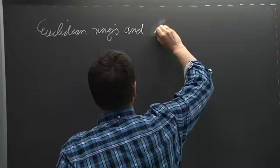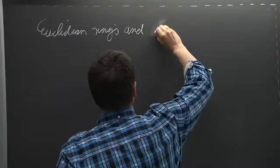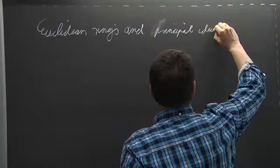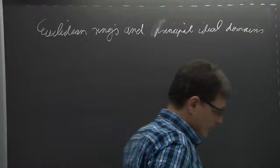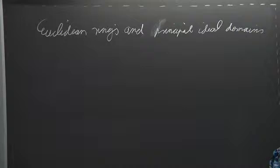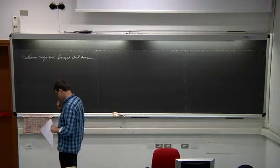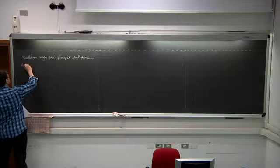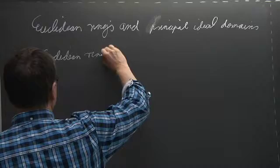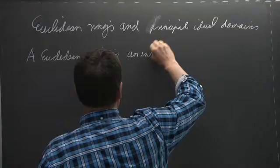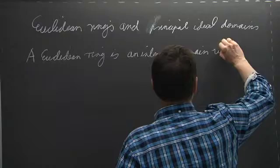Some remarks on principal ideal domains. Last time we had seen the division with remainder for polynomials with coefficients in a field, and everybody knows the division with remainder for integers. A Euclidean ring will be an integral domain where you have division with remainder.